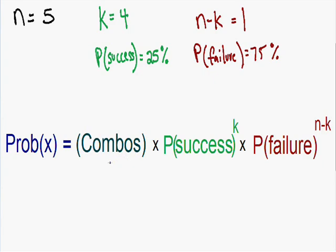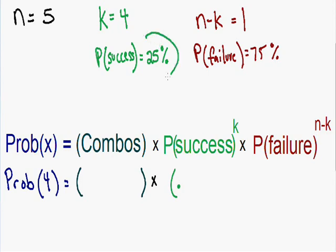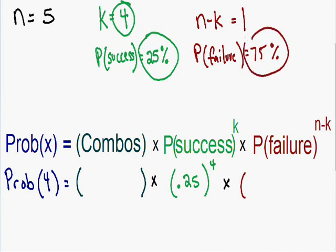So let's plug everything into our formula. We're finding the probability that the student got four questions correct. That probability equals the total number of combinations — which we'll come back to — multiplied by the probability of success, 0.25, raised to the power K which is four. This is all multiplied by the probability of failure, 0.75, raised to the power N minus K, which is the number of failures equal to one.